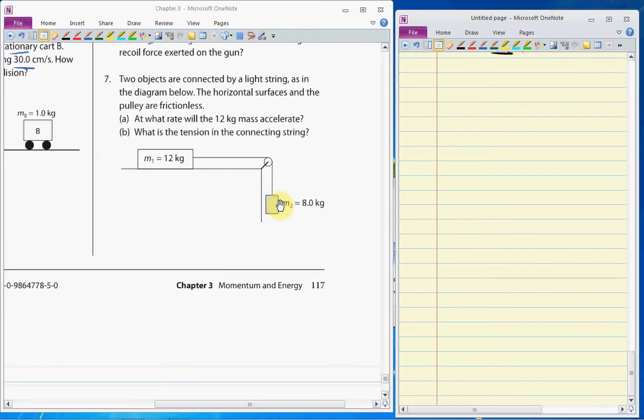Okay, in question 7, we have these two masses connected by a light string. I like to start with free body diagrams of anything that we talk about.